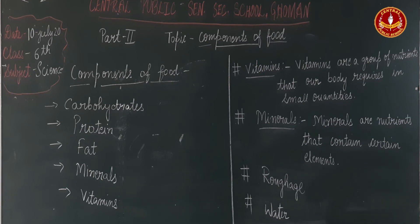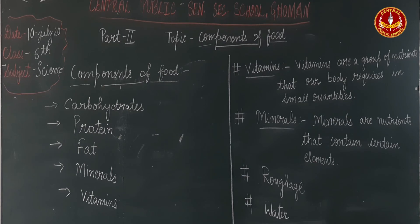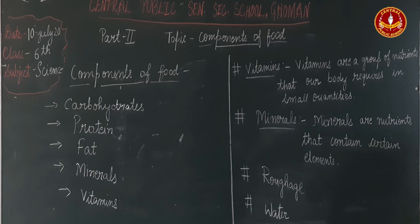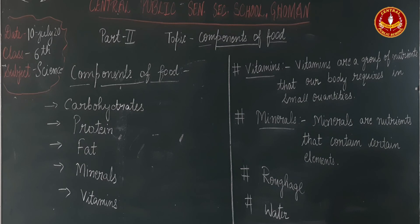The portion of plant food that does not provide nutrients to our body but helps in maintaining a healthy digestive system is called Roughage or Dietary Fiber. Roughage does not provide nutrients but helps maintain digestion. It can be soluble and insoluble.